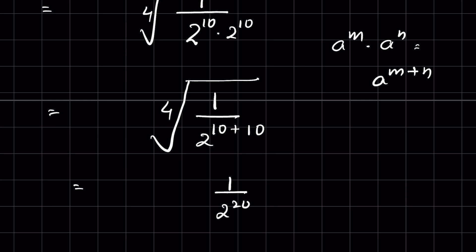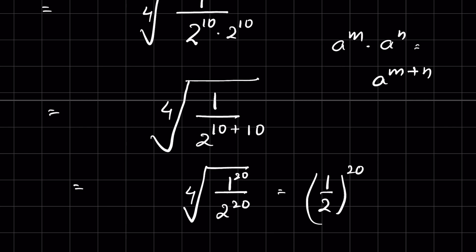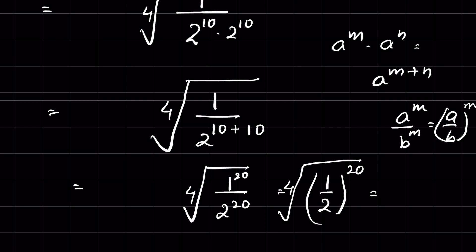This gives 1 upon 2 raised to the power 20 under the fourth root. We can write this as 1 upon 2 whole raised to the power 20, since 1 is also 1 raised to the power 20. Using the identity a raised to the power m upon b raised to the power m equals a upon b whole raised to the power m, we get 1 upon 2 whole raised to the power 20 under the fourth root.